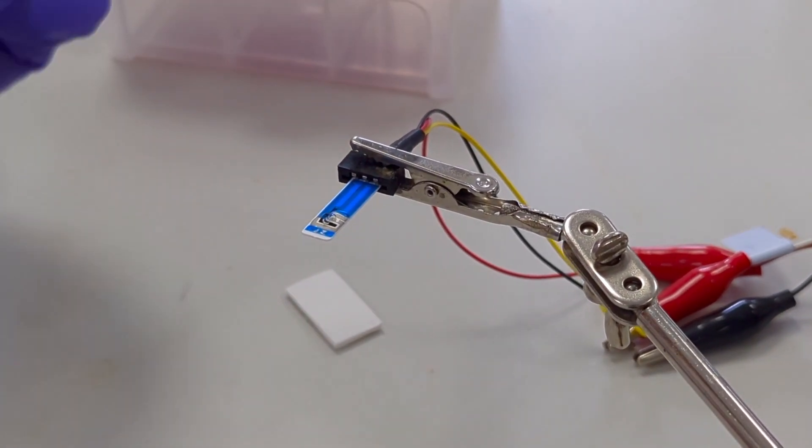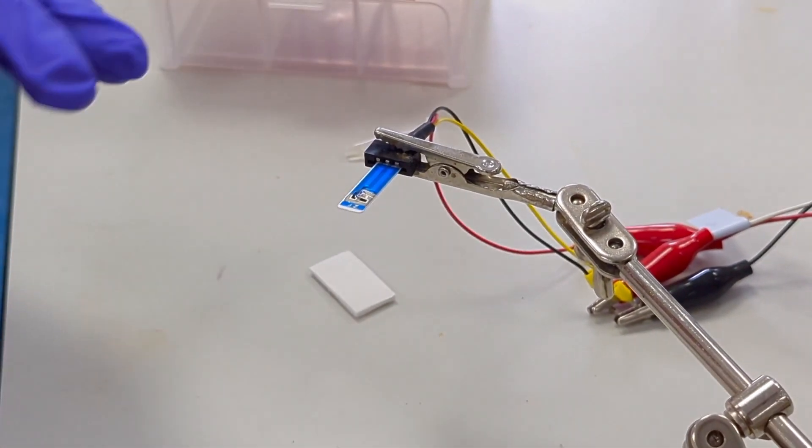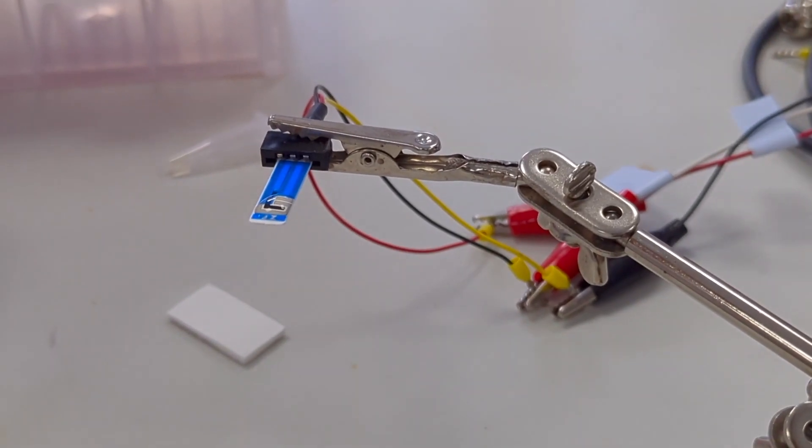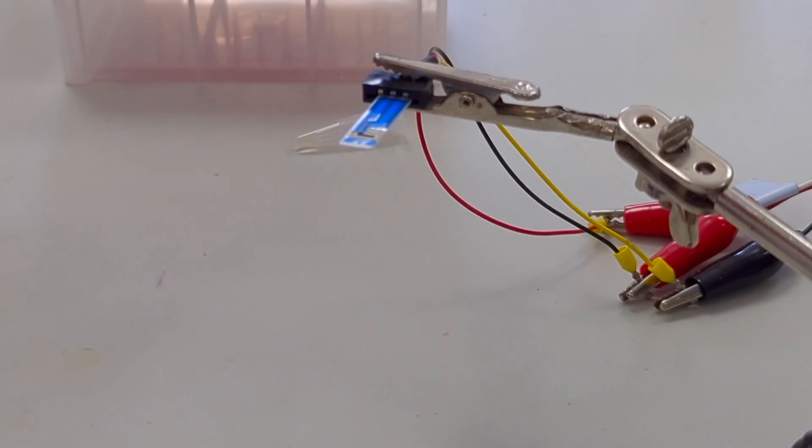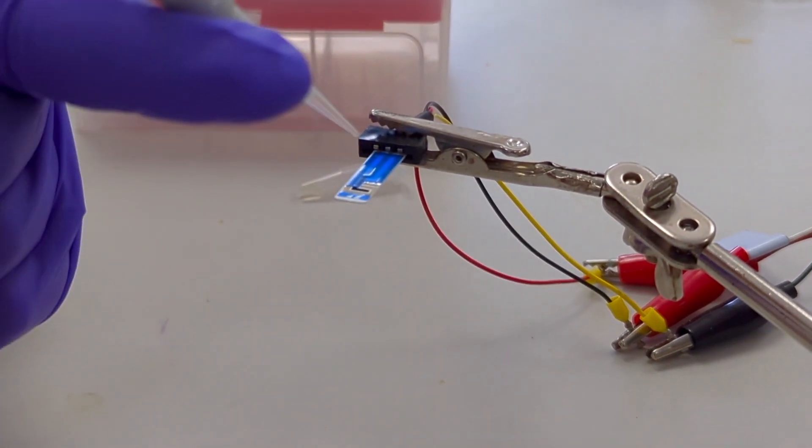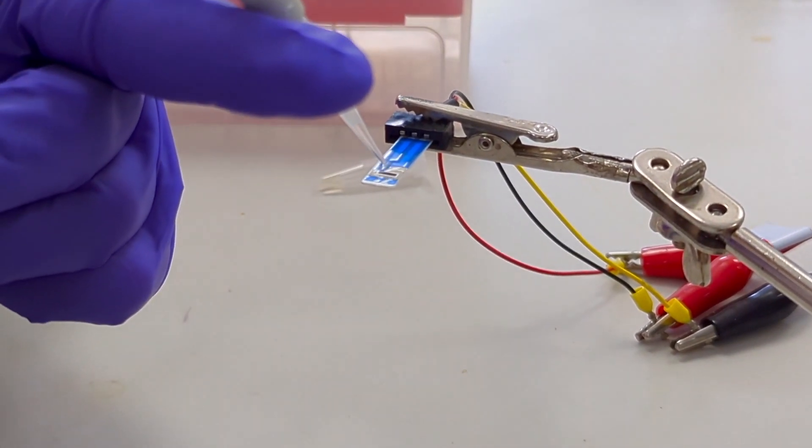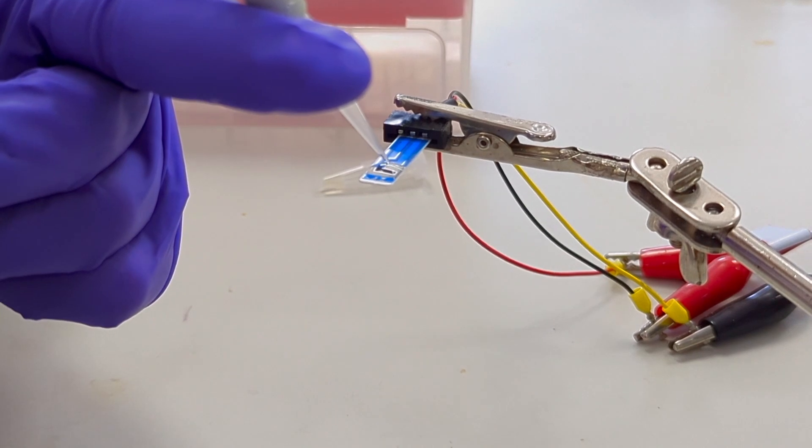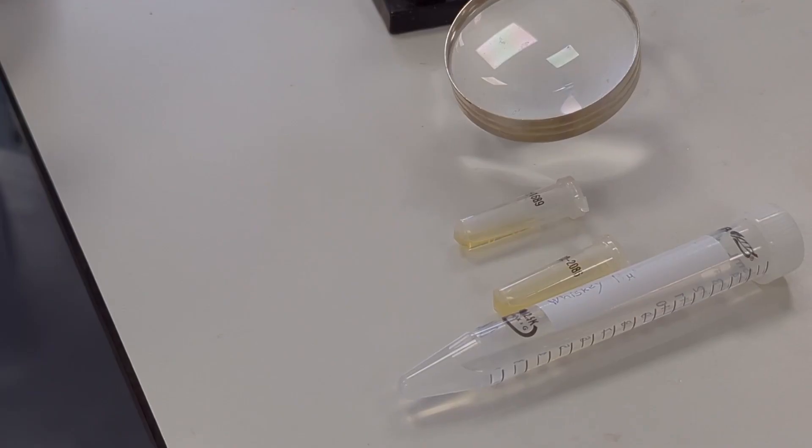Once all the electrodes are covered in the sample, we can then start the electrochemical measurement. Now on a new sensor, I add the same buffer solution to allow the sensor to stabilize while that's happening.